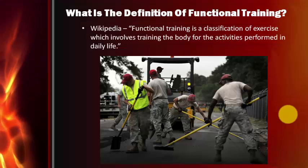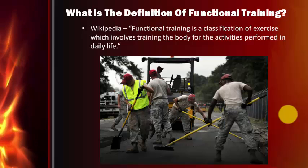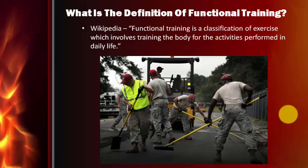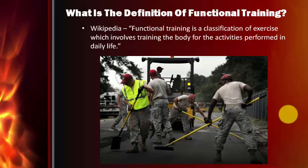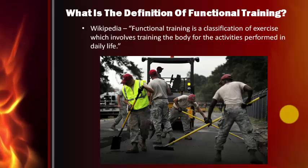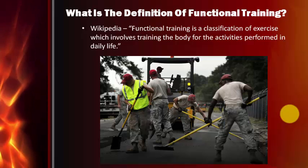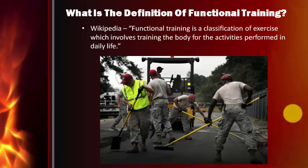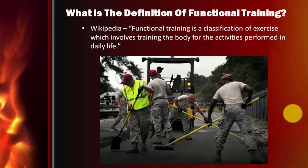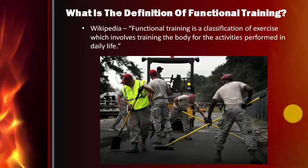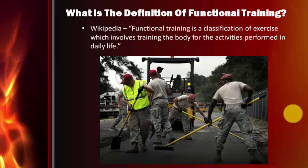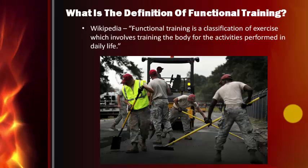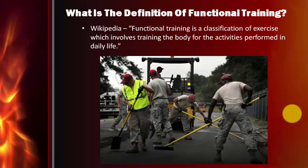So what's the definition of functional training? There's a lot of confusion about what functional training really is. Wikipedia defines it as a classification of exercise which involves training the body for the activities performed in daily life. So if you're a construction worker, activities like twisting, lunging, and bending are essential movements you need for performing your job. If you have a problem with any of these movement patterns, there's a chance of injury, pain, or losing your job.